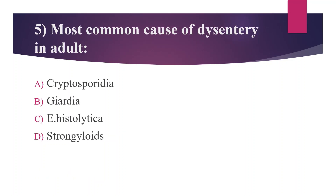Fifth question: Most common cause of dysentery in adults? Option A. Cryptosporidia, option B. Giardia, option C. Entamoeba histolytica, option D. Strongyloides. The answer is option C, Entamoeba histolytica. The other options — Cryptosporidia, Giardia, and Strongyloides — are diarrhea-causing parasites. Giardia causes Giardiasis, associated with diarrhea, stomach cramps, and nausea.